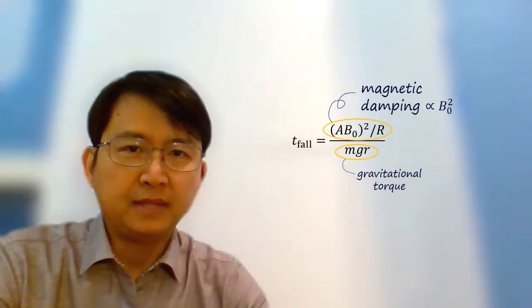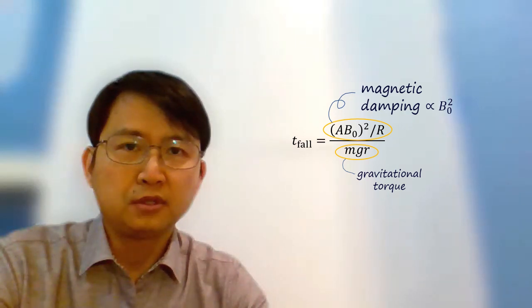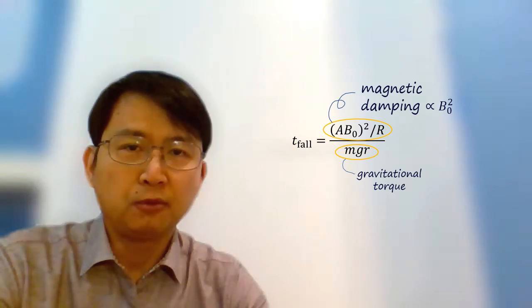We found a mathematical equation describing the falling time. Magnetic damping is proportional to B0 squared. To test the theory, we measured the fall time at different field strengths along an MRI magnet.